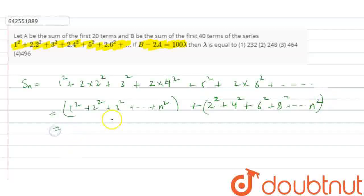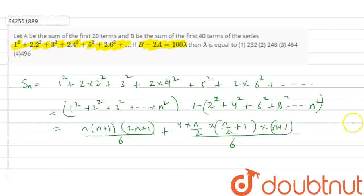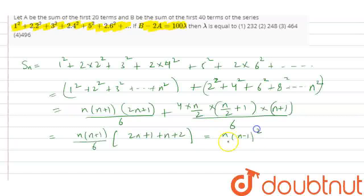The sum of n squares is n(n+1)(2n+1) divided by 6, plus the additional terms. We can take common factor n(n+1) divided by 6, so we get 2n+1 plus 1 plus n plus 2. This simplifies to n(n+1) squared divided by 2 times n.